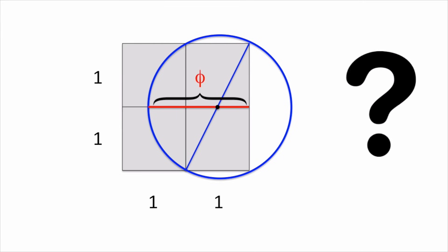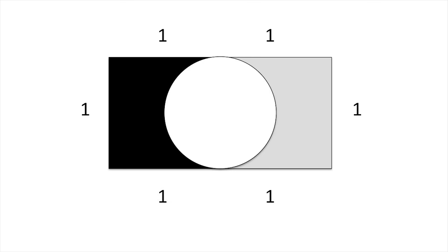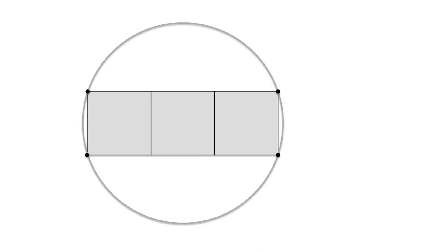There are other ways to get Phi geometrically. Here's a way with two squares and a circle. Here's a way with three squares and a circle. Here's another way with three squares and a circle.